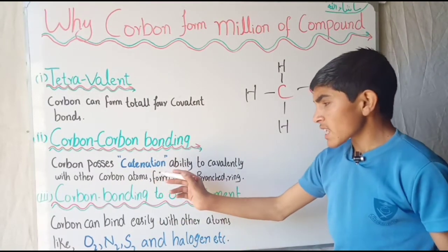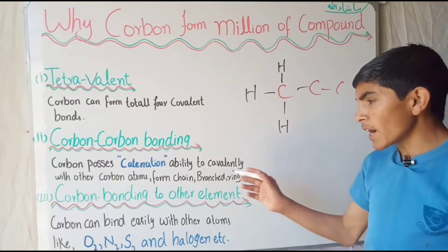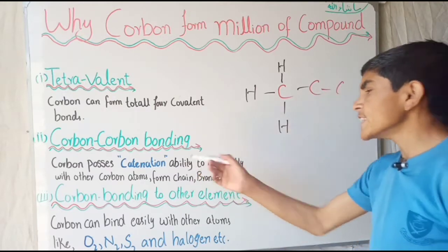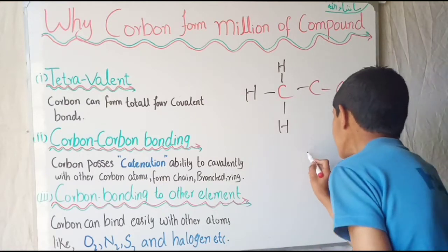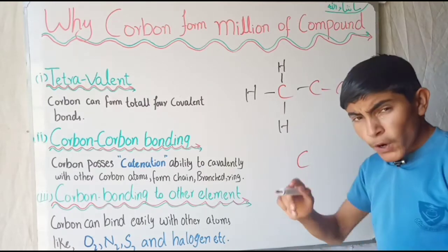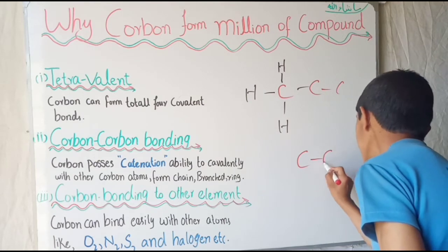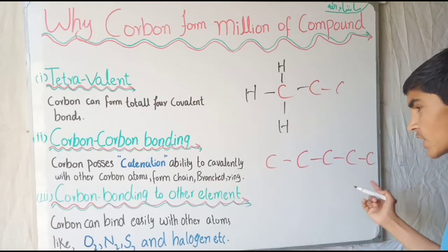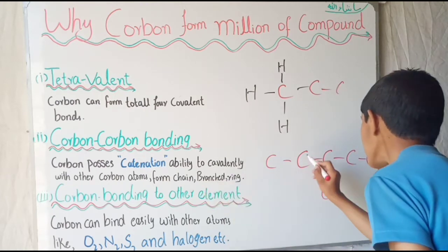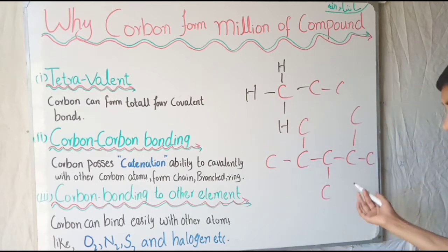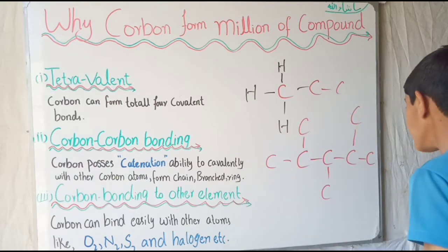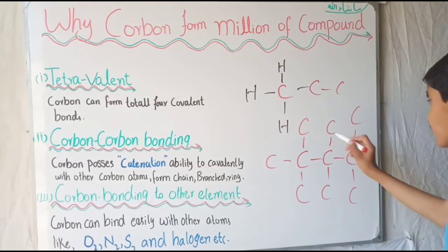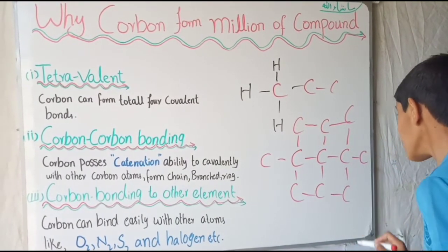The second property is carbon-carbon bonding — the ability of carbon to covalently bond with other carbon atoms, forming straight chains, branched chains, and ring chains. This means that carbon is allowed to make a bond with itself. It can make a straight chain and bond with each other. It is also allowed to make a branched chain, as you can see here.